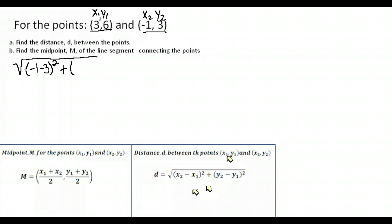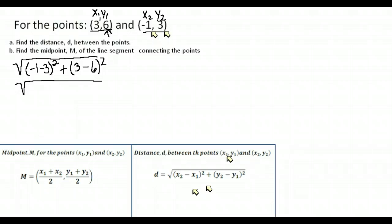Now we subtract the y's, and we have to subtract them in the same order — this part is important. Since the first x we used came from the second point, the first y we write must also come from that same point. So we do three minus six, squared. Carefully follow order of operations and watch your negatives: negative one minus three is negative four, and three minus six is negative three.